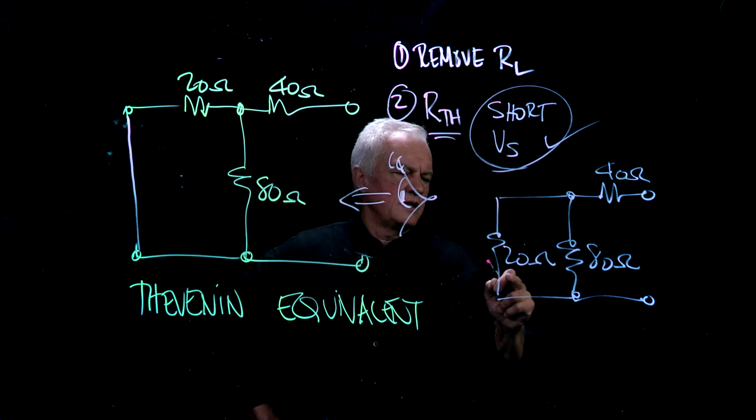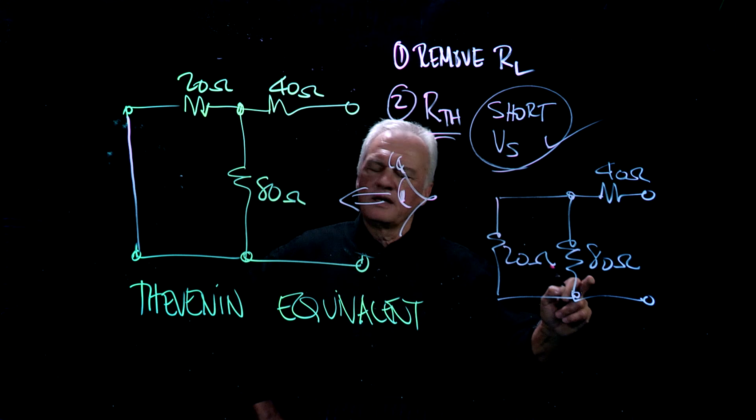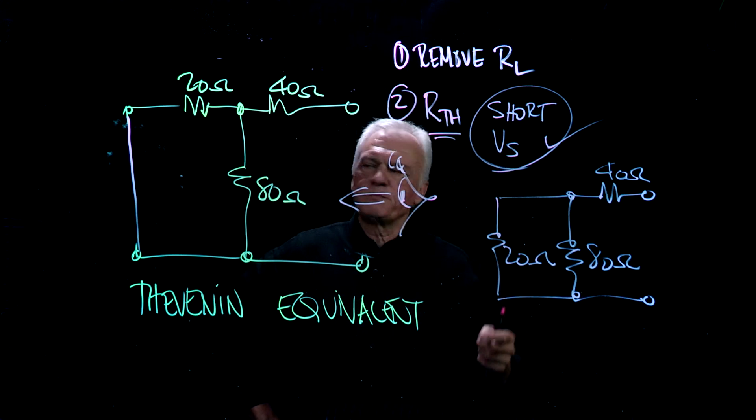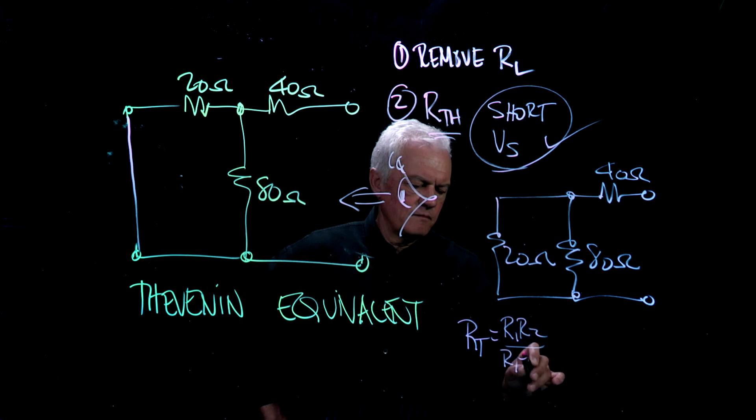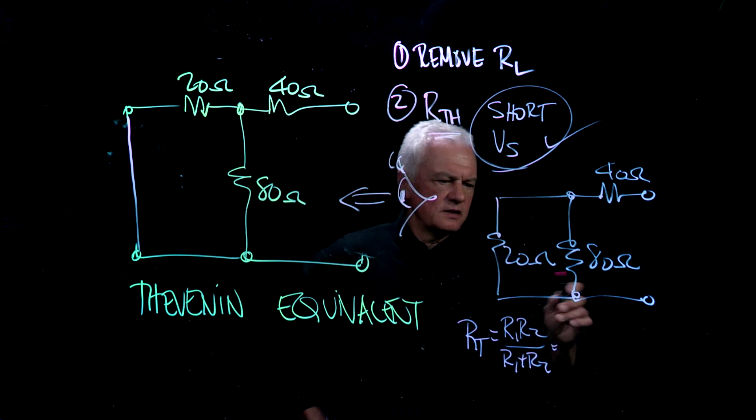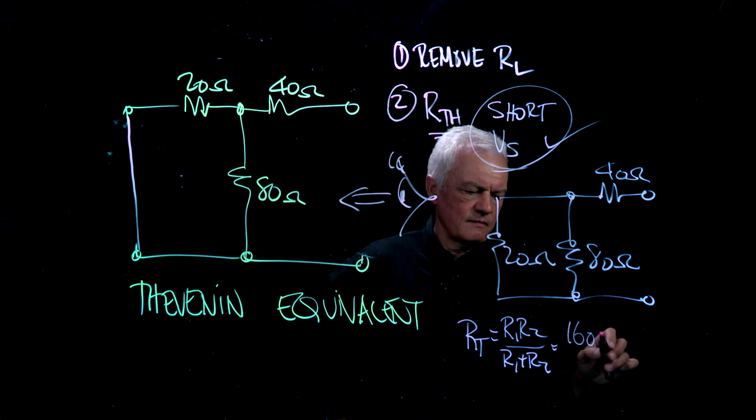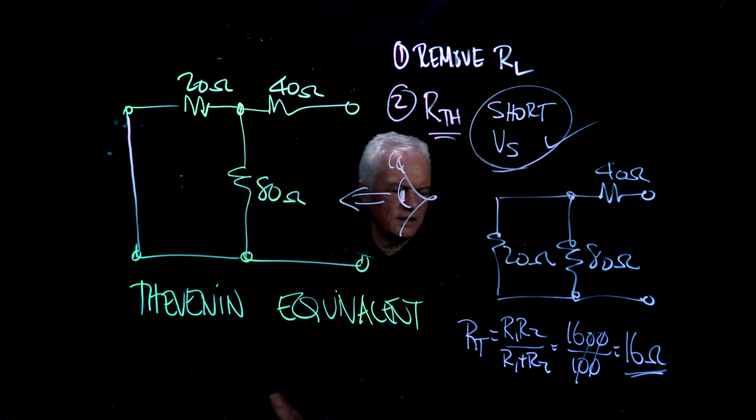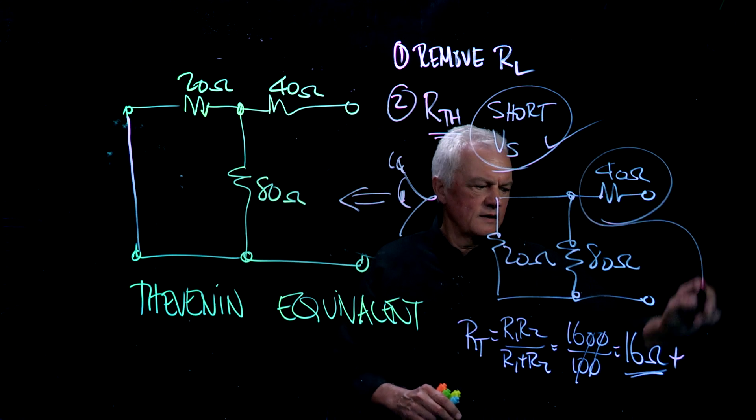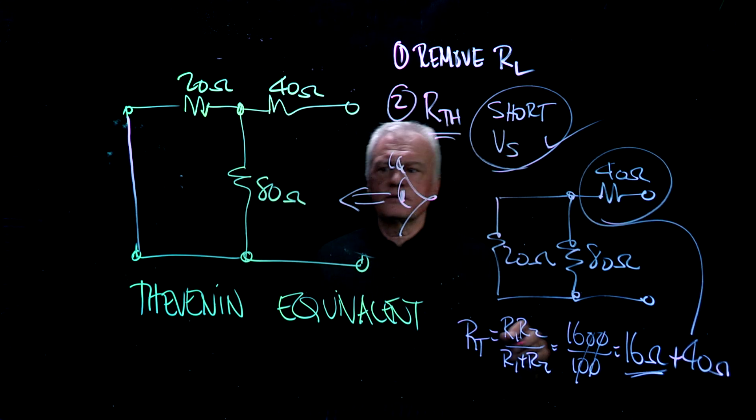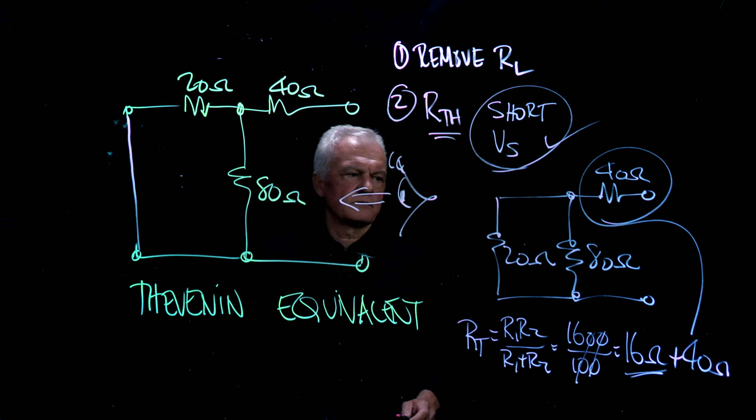If I use the 1 over RT equals 1 over R1, 20, plus 1 over 80, and then I do the math and then flip it, I will come up with a number. Remember, another way to do it is if we use the other formula, which we showed, what we get is 20 times 80 divided by 20 plus 80, which equals 16. 16 is less than 20. That's just for the two in parallel. Now we have to add the 40. So total resistance, our R Thevenin will be 56 ohms.